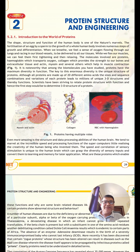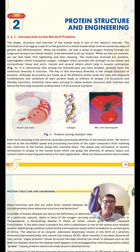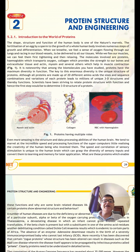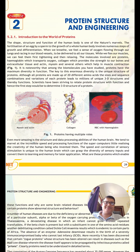One protein you have already read about in class 11 is RUBISCO — Ribulose 1,5-bisphosphate carboxylase oxygenase. It is the most abundant protein on earth and the most important enzyme during photosynthesis. So proteins have diverse roles.